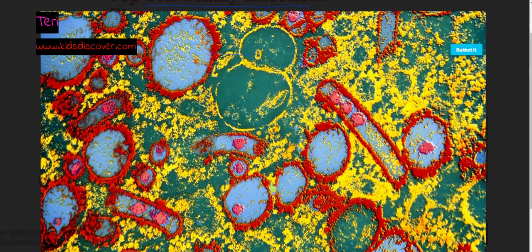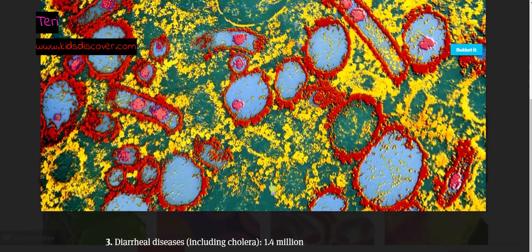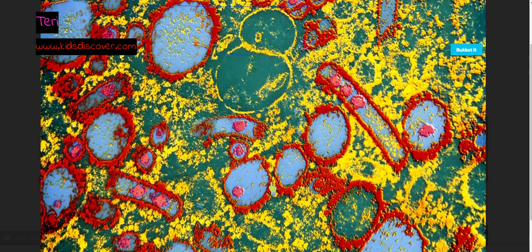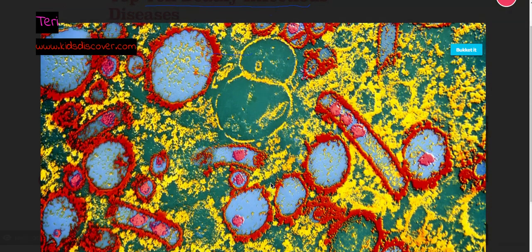Number three is intestinal diseases like cholera. This is what it looks like in the microscope slide.